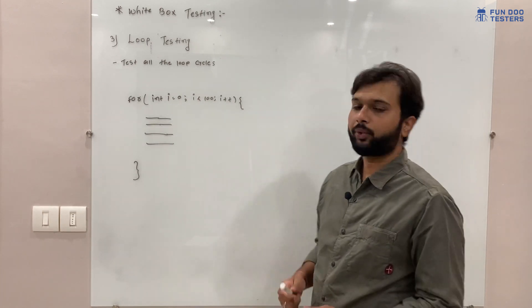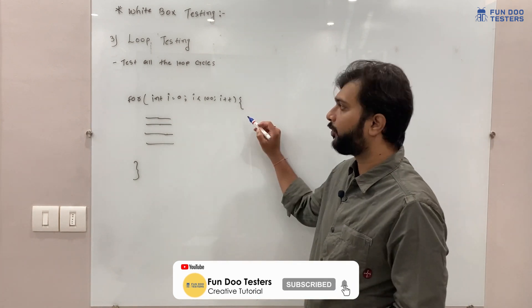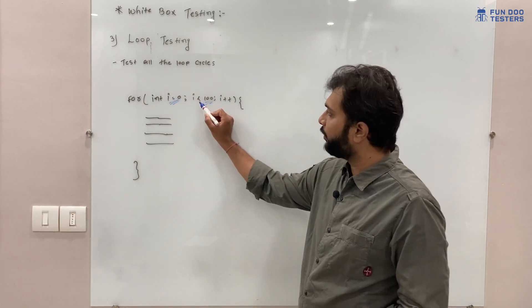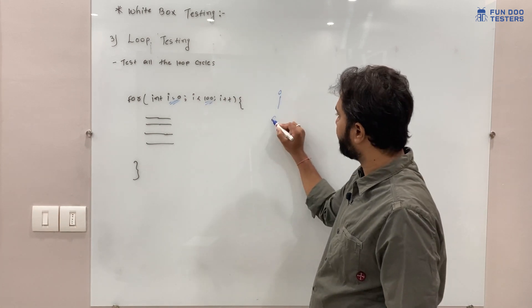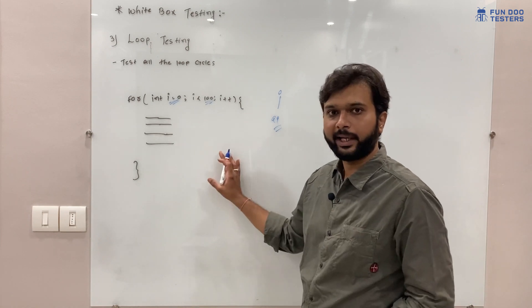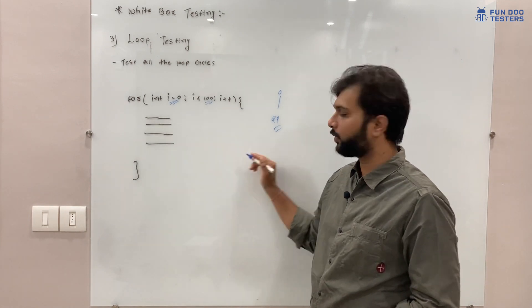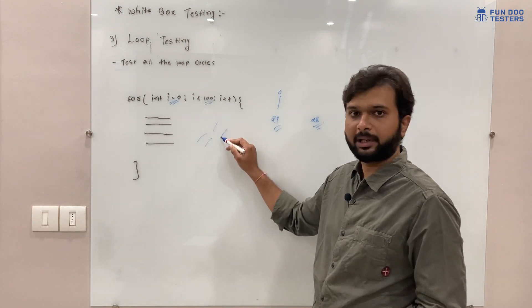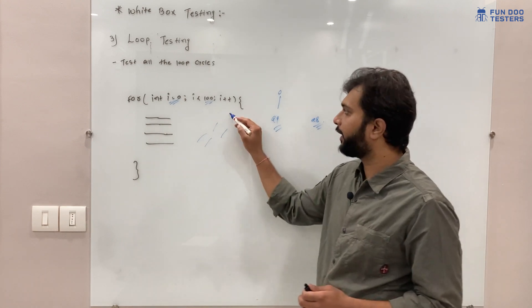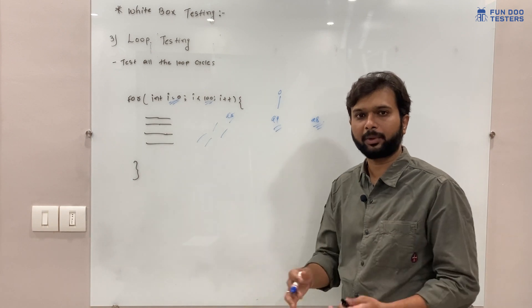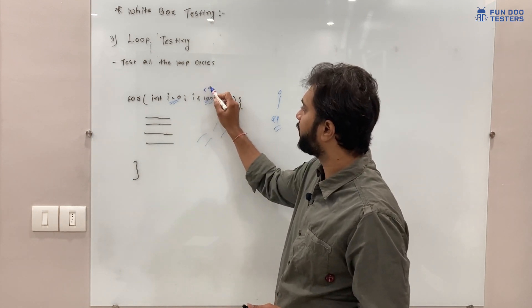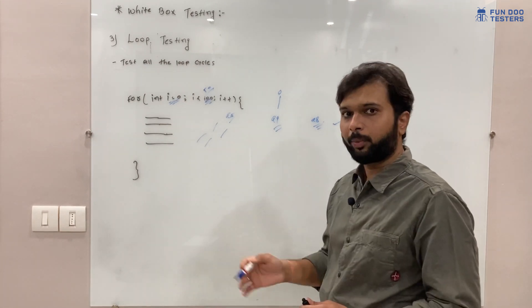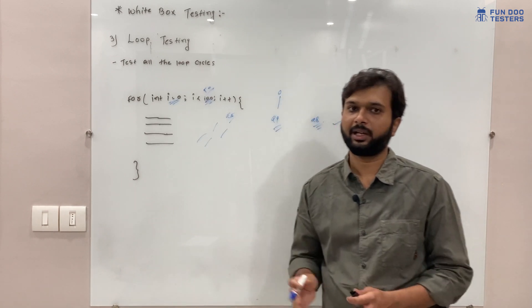The third type is loop testing. In loop testing we test all the cycles of the loop. For example, in a for loop starting from 0 and going up to 99 (less than 100), the loop executes 100 times. In a real-time scenario, if someone enters data for 98 iterations, the developer must make sure the loop works for that condition — it may break after 98 iterations, slow down, or something else may happen. Whether the loop is written for 100 iterations or 15, developers must verify all loops, including while loops and do-while loops.